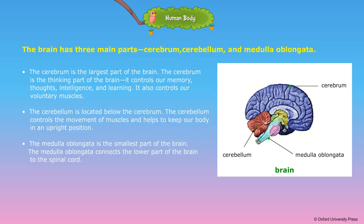The cerebellum is located below the cerebrum. It controls the movement of muscles and helps to keep our body in an upright position. The medulla oblongata is the smallest part of the brain and connects the lower part of the brain to the spinal cord.